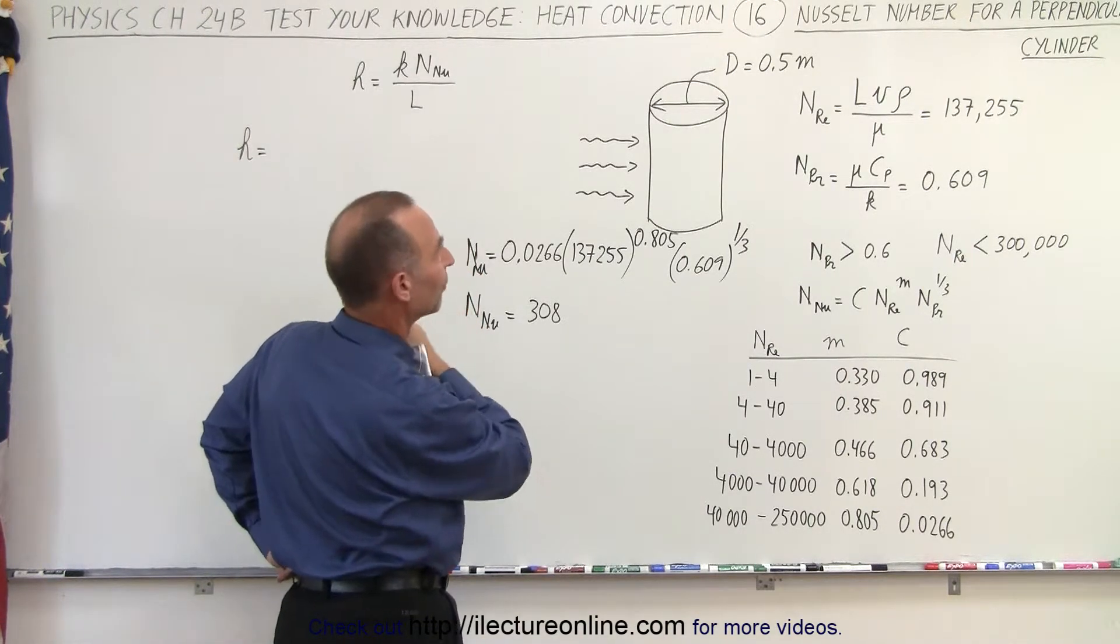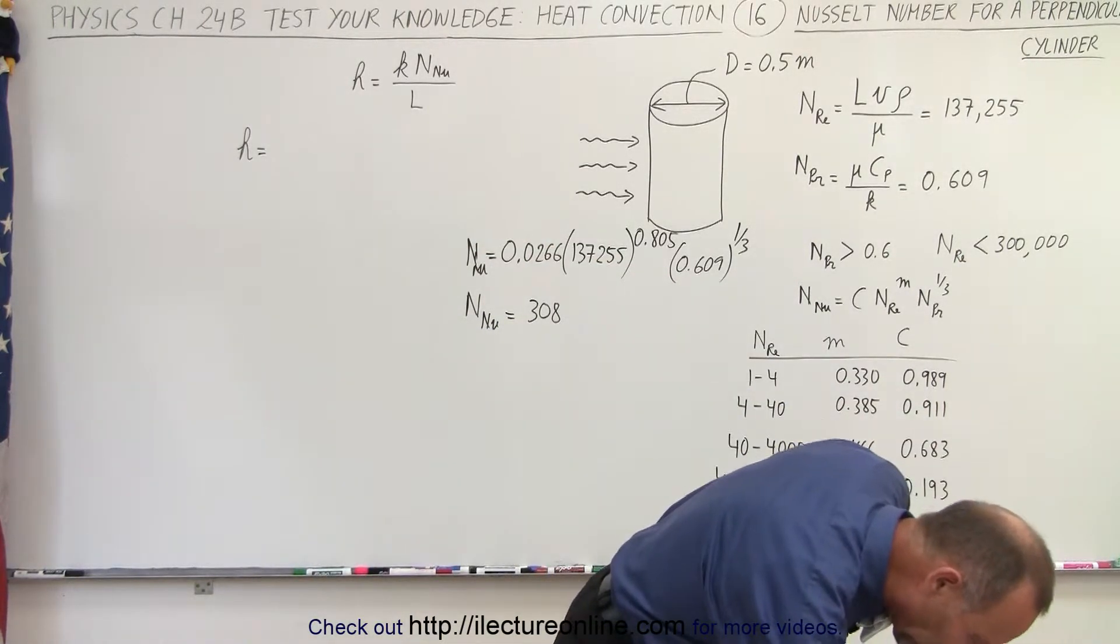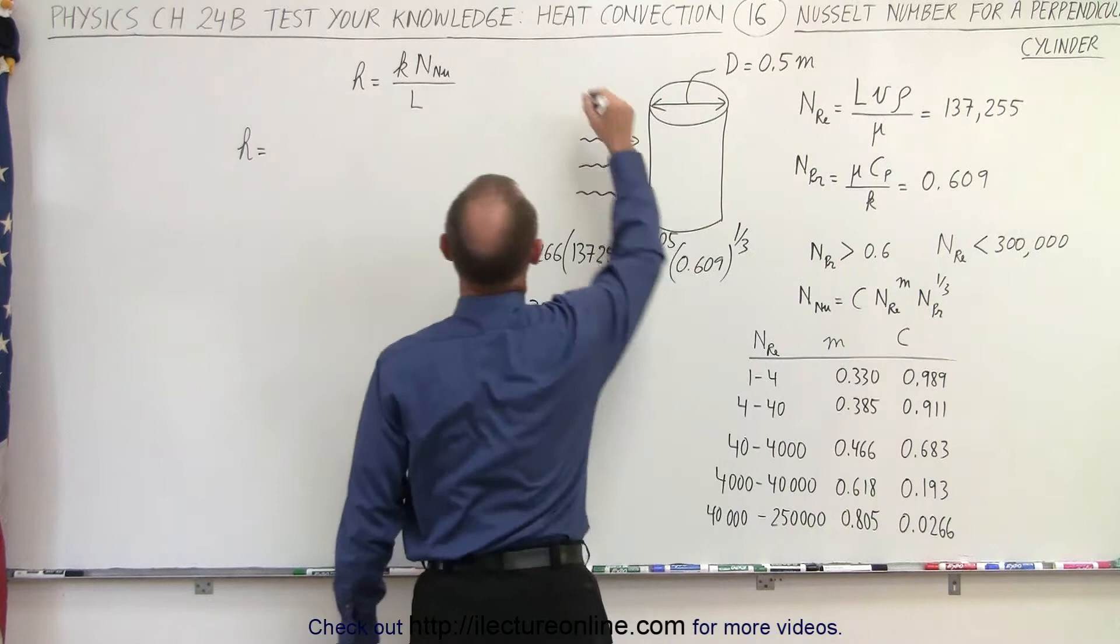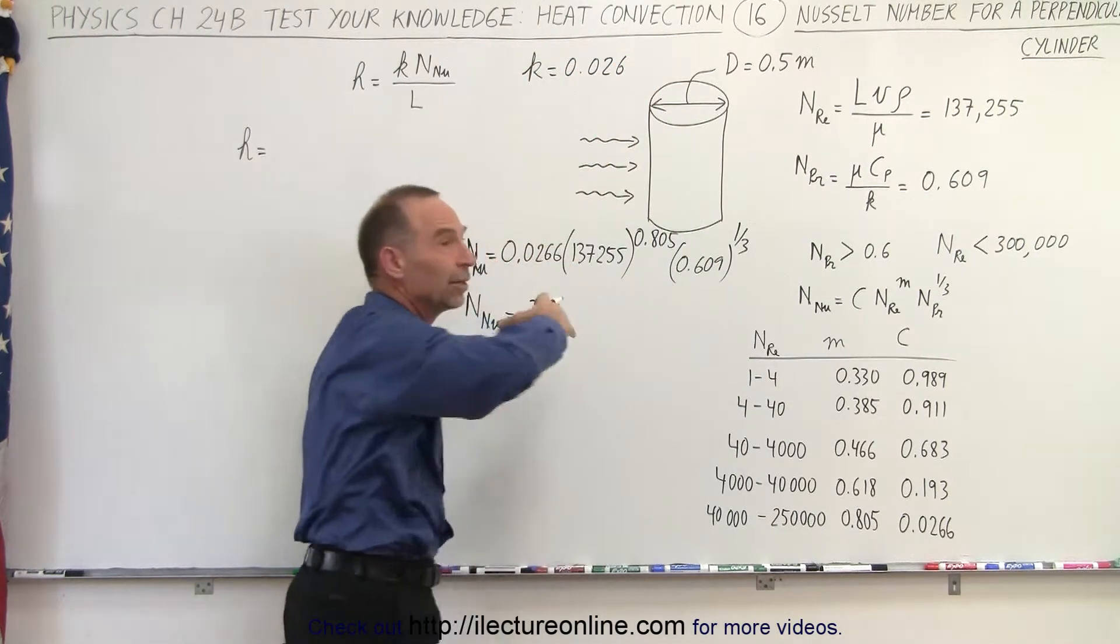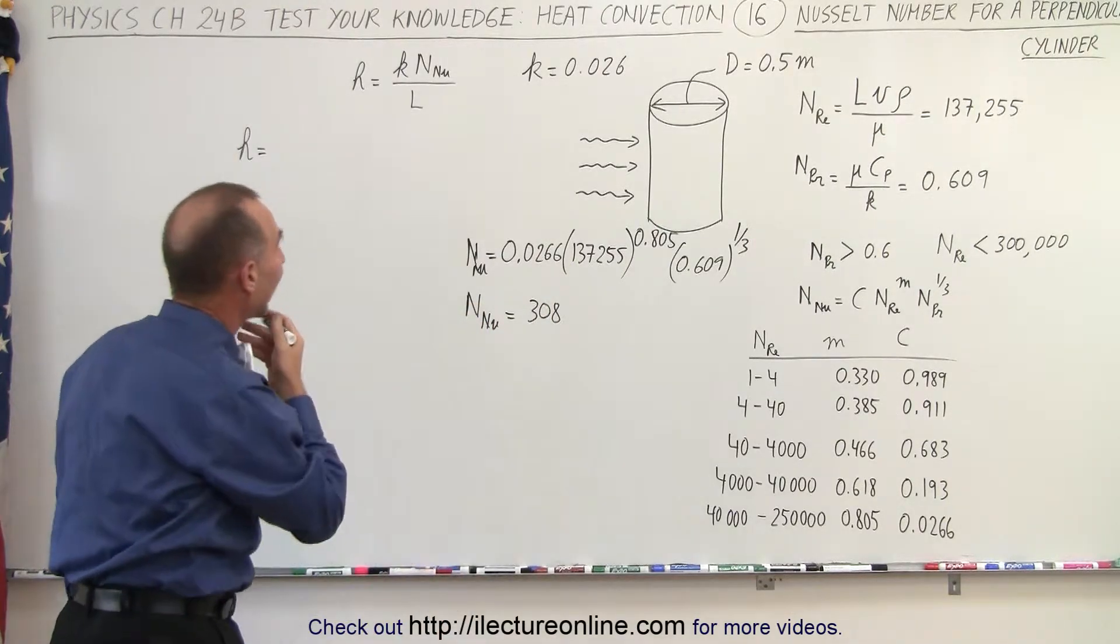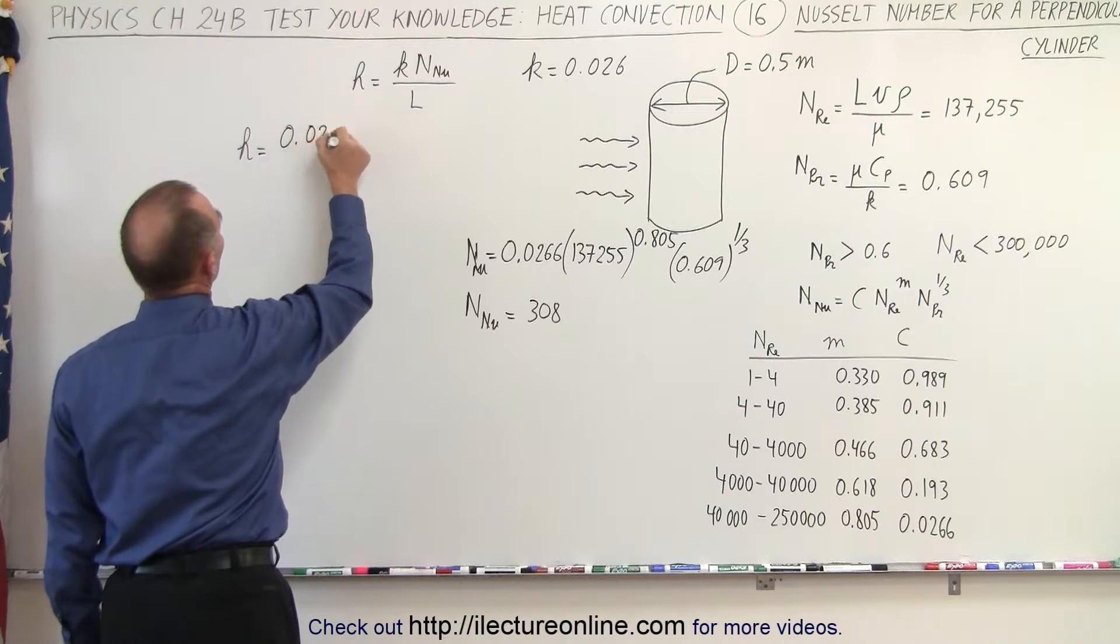I didn't put a value down for K. So let me look and see what I wanted to use for K, 0.026. So we had K is equal to 0.026, that would be watts per meter per kelvin. So that goes in here, 0.026.